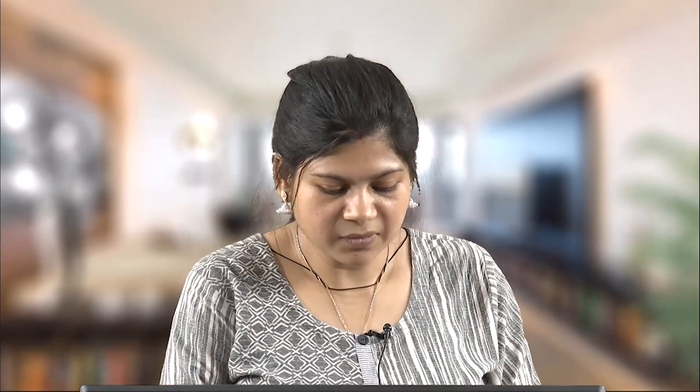The natural angular frequency ω₀ = √(k_m/m), where k_m is the stiffness of the membrane (which depends on the tension applied). The natural frequency is independent of the membrane mass itself because the membrane is a very light, thin pliable material, and the dense attached mass dominates the overall natural frequency.